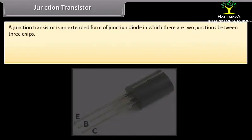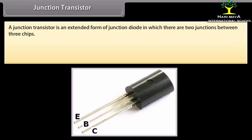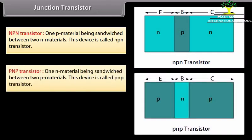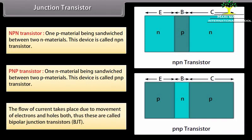Junction transistor: A junction transistor is an extended form of junction diode in which there are two junctions between three chips. There are two kinds: NPN transistor, where one P material is sandwiched between two N materials, and PNP transistor, where one N material is sandwiched between two P materials. Since current flow takes place due to movement of both electrons and holes, these are called bipolar junction transistors.